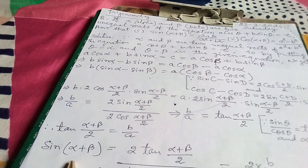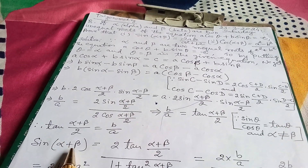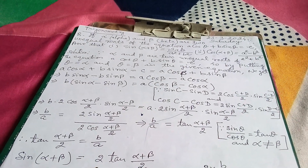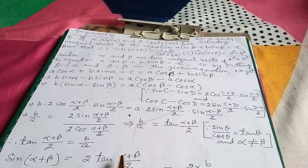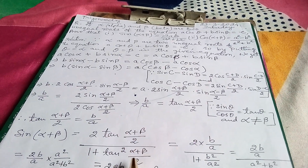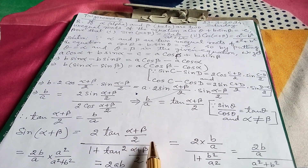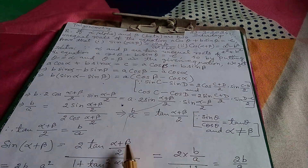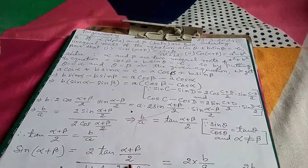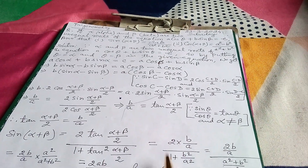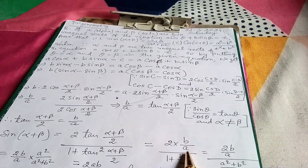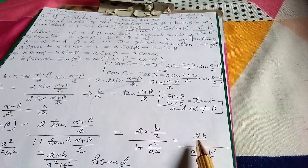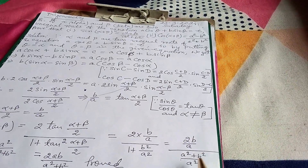Now, using the double angle formula: sin(α+β) = 2·tan((α+β)/2) / (1 + tan²((α+β)/2)). Substituting tan((α+β)/2) = b/a, we get 2·(b/a) / (1 + b²/a²). Finding the LCM gives 2b/a divided by (a² + b²)/a².